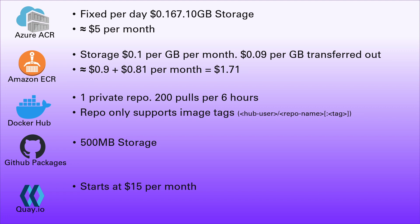Quay.io — the Red Hat offering — has no free tier at all, starting at $15 per month, making it by far the most expensive option out of the box. However, at higher usage levels it could become more attractive, since the other options get more expensive the more images you store and the more data you transfer, whereas Quay includes larger storage and transfer allowances for that $15.